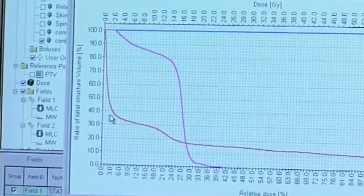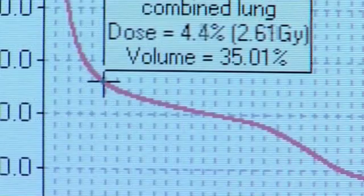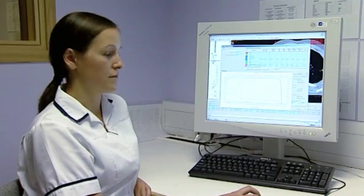So looking at this graph, we can see at the 35% level, the dose to the combined lung is only about 4.5%, which is very good.